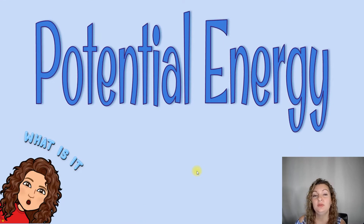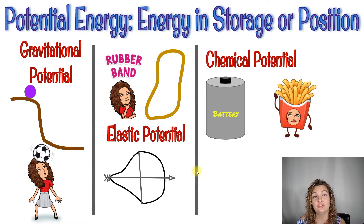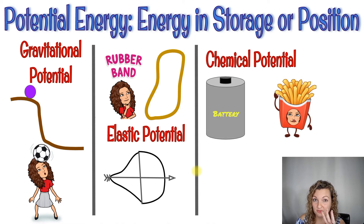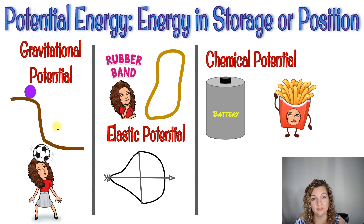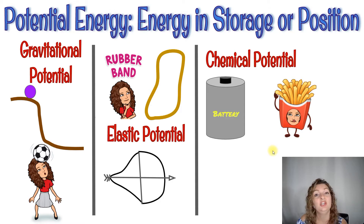Our first one: potential energy. Go ahead and pause now, then I'm going to tell you the answer. So potential energy is energy in storage or position. There are three different types: gravitational potential, which is energy of position — how high up is it; elastic potential, which is about expansion and contraction; and chemical potential energy, which is energy in storage to use later.